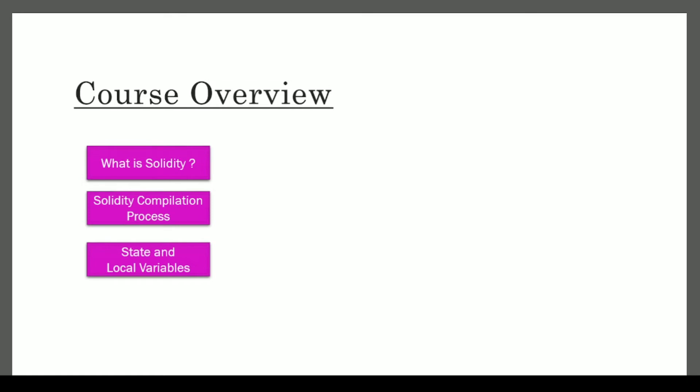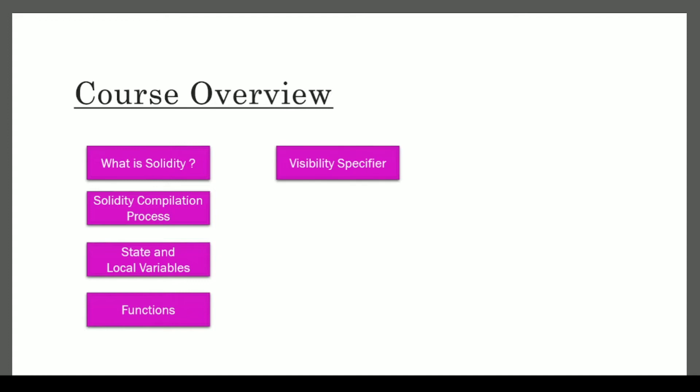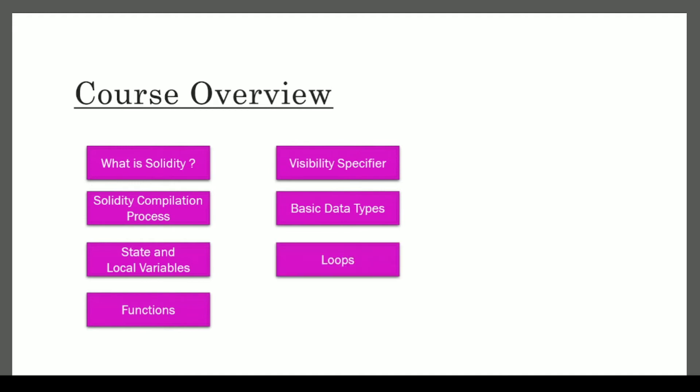After the compilation process, we will talk about state and local variables. Then we are going to cover functions and visibility specifiers — public, private, internal, and external — all in great detail. We will also cover basic data types like integers, bool, and address, followed by loops and conditionals including fail statements, require, and modifiers.